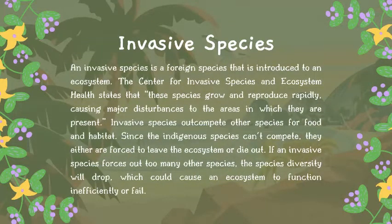Last on the list is invasive species — a foreign species introduced to an ecosystem. The Center for Invasive Species and Ecosystem Health states that these species grow and reproduce rapidly, causing major disturbances to the areas where they are present. They outcompete other species for food and habitat, forcing indigenous species to leave or die out. If an invasive species forces out too many others, species diversity drops and the ecosystem may function inefficiently or fail.